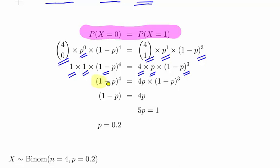So just simplifying that, we get 1 minus p to the power of 4 equal to 4p times 1 minus p to the cubed. So essentially what we could do here is just divide both sides by 1 minus p cubed. That would leave us with 1 minus p on this side, 4p on this side. That means 5p is equal to 1, and therefore p is equal to 0.2.